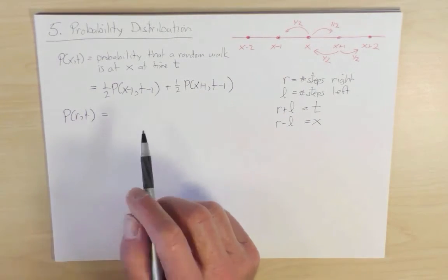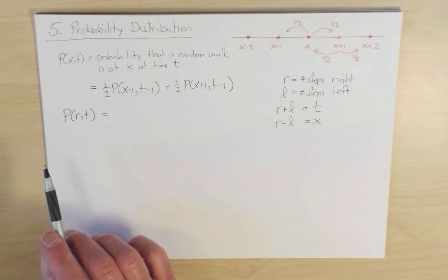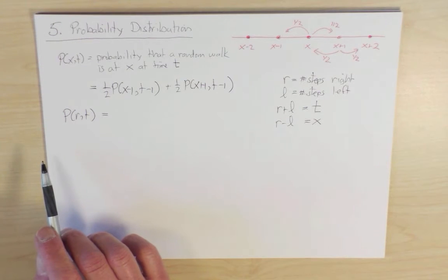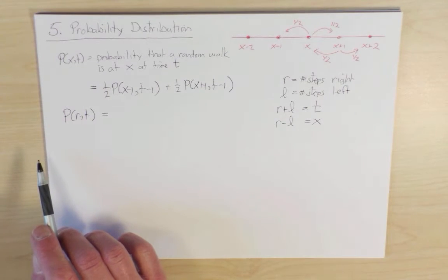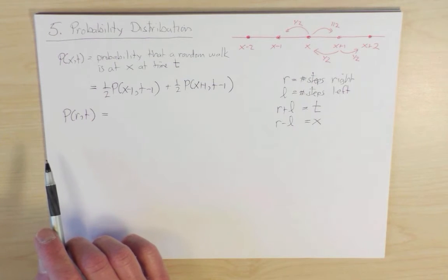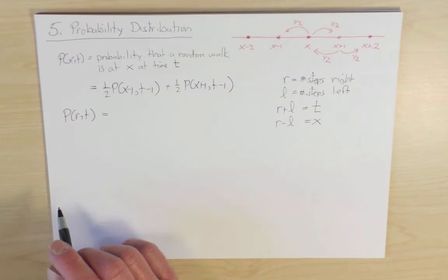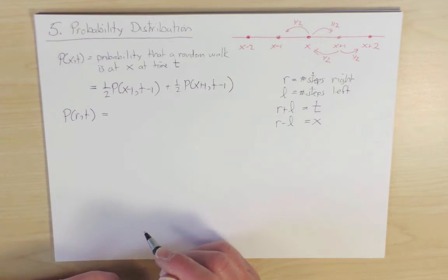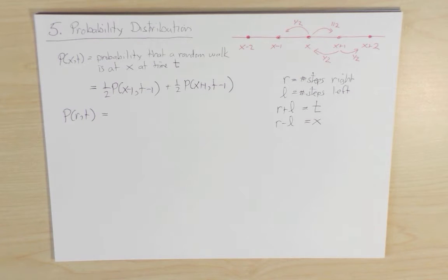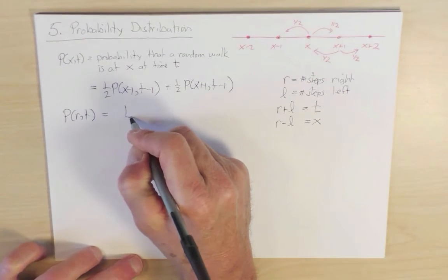So in principle one can solve the master equation directly, but here I'm just going to argue probabilistically that I just have to count the total number of walks that take a total of r steps to the right. So the total number of walks of any size, of any orientation, is just t factorial, because I can take the steps in any order.